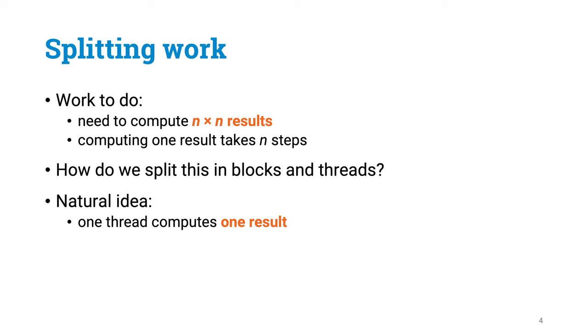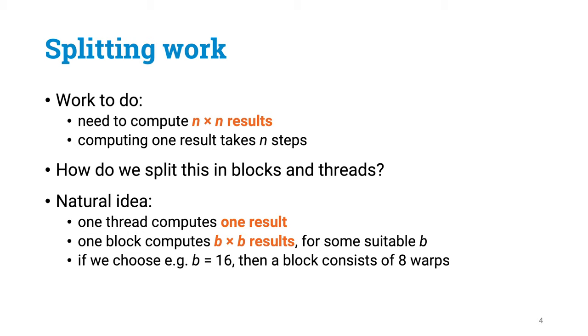What about blocks? Well, if one thread computes one result, maybe one block would compute B by B results. If we pick B is 16, then the number of threads is 256 per block, which is a nice round multiple of 32. So we have got n by n threads organized in blocks of size 256.